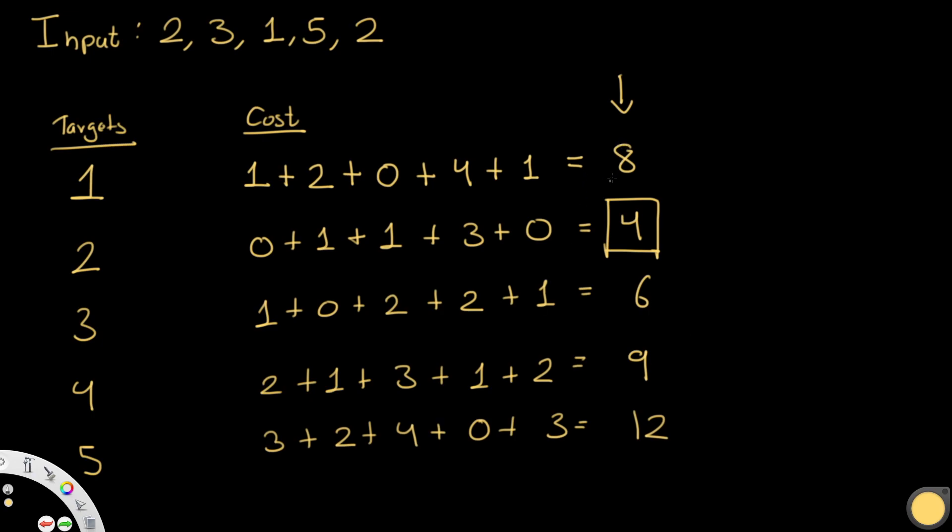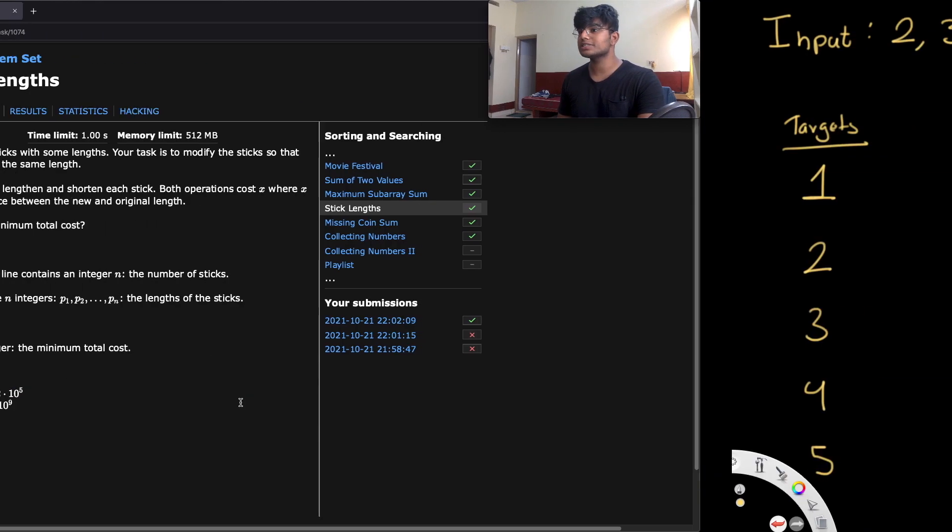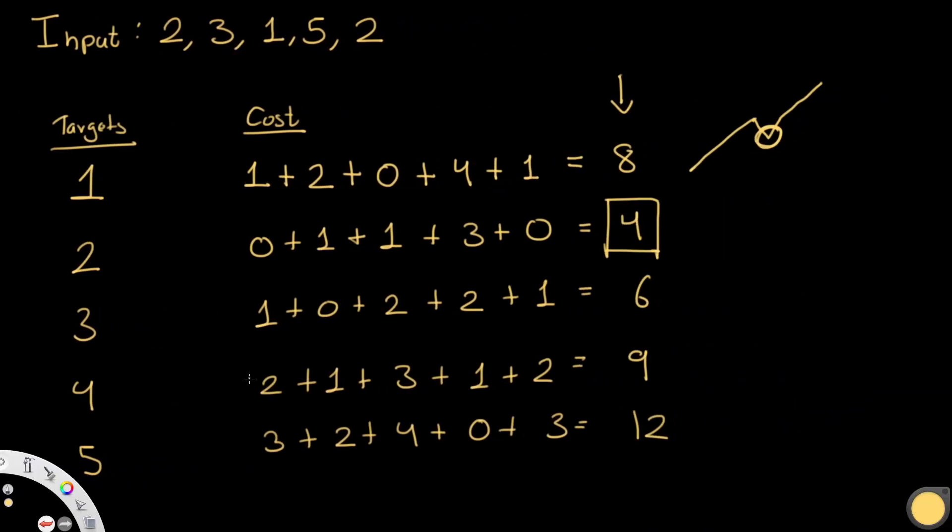A simple way to actually identify what target is going to give us a minimal cost is we can iterate through all the possible targets in this case of 1 to 5 and look for a number which is smaller than both of its neighbors. 4 is less than 8 and it's less than 6 so it's kind of like a minimum point. This is one way you could do it but obviously the main problem is that you could have up to 10 to the power 5 sticks and they could have a length of up to 10 to the power 9. This is not the best approach especially since it is very brute force.